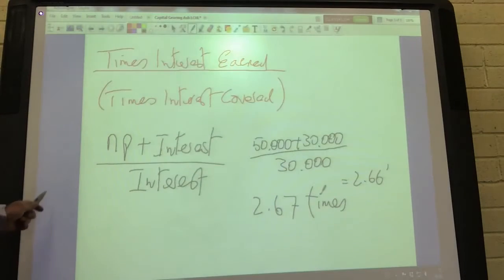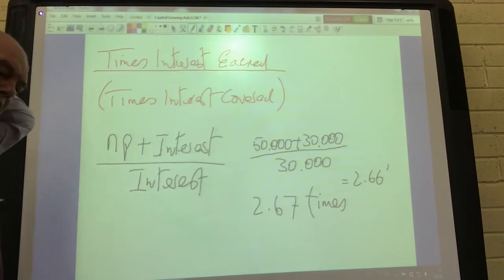The profit before interest is 2 and 2 thirds times the actual interest. Last year's figure was 8 times, so that's a much worsening trend. We would say that Ash Limited is under more threat from outside investors and that could result in problems for the company's ability to pay their dividends for ordinary shareholders in the future.